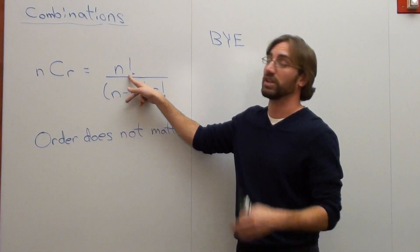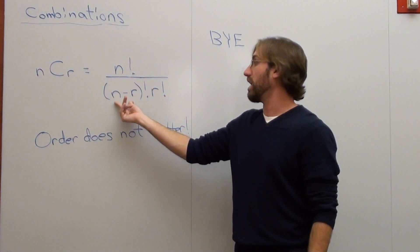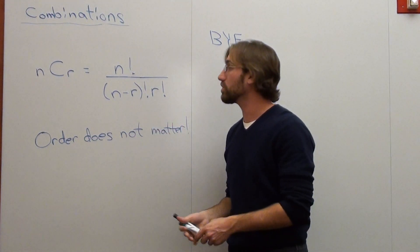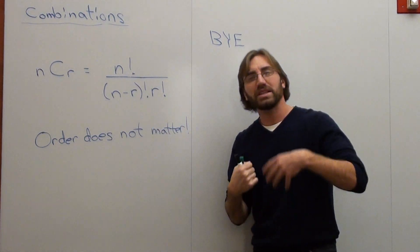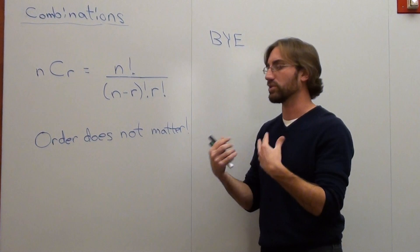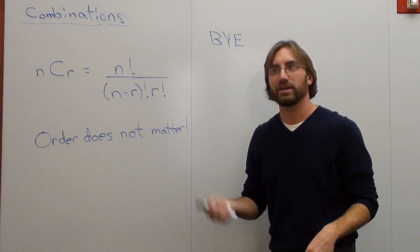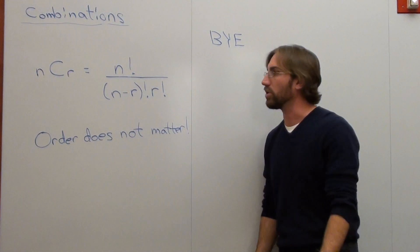And the formula is N factorial over N minus R factorial times R factorial. So we're going to work with the word 'bye'. How many different combinations can I use? And this is where students get the words permutations and combinations mixed up. How many different ways can I rearrange the word 'bye' using all three letters?